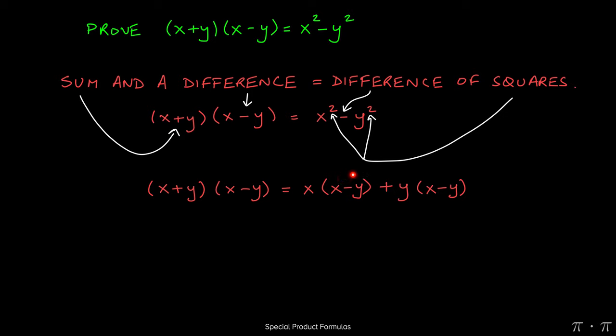Now we can distribute the x into both of these terms. That will give us an x squared, x times x is x squared, x times negative y will give us a negative xy, y times x will give us a positive yx, whereas y times negative y will give us a negative y squared.